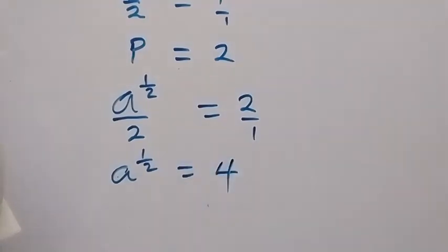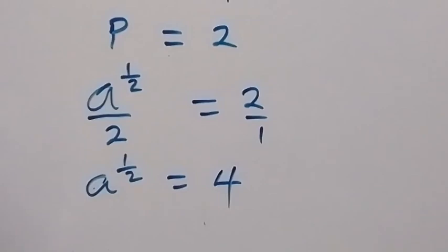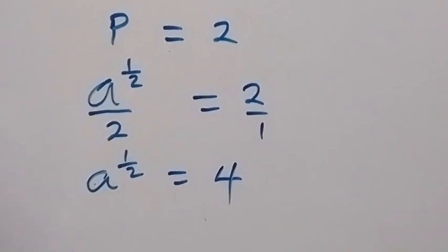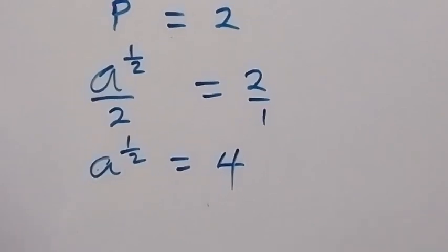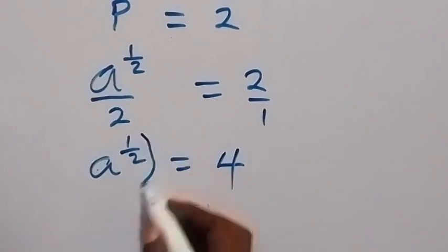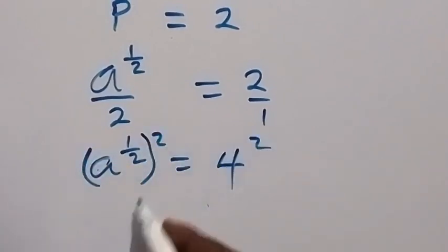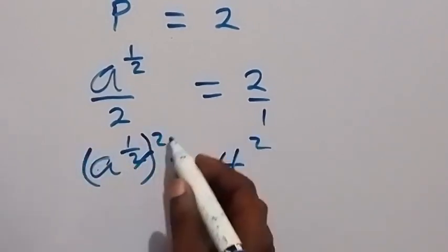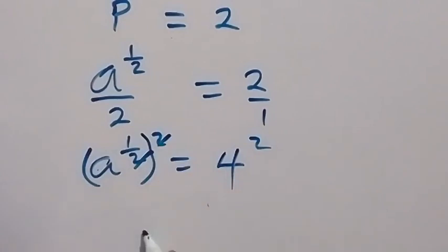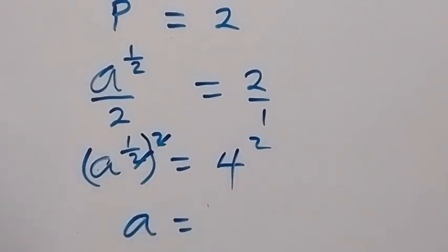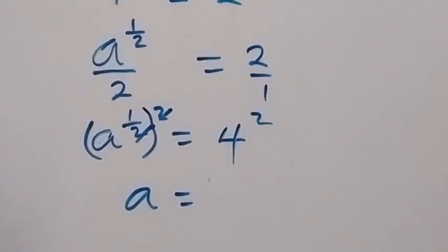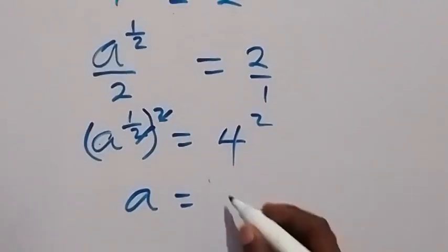We can square both sides to remove the power of half. Squaring a raised to power half gives us a, and squaring 4 gives us 16. Therefore, a equals 16.